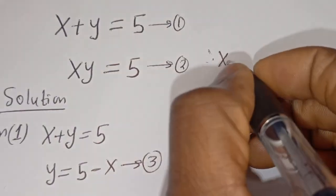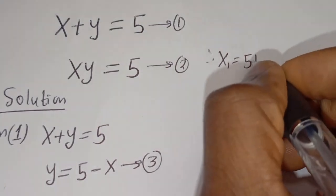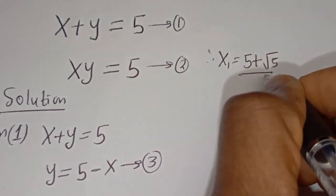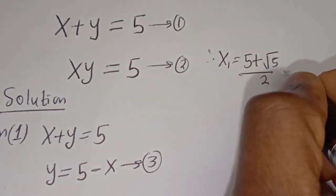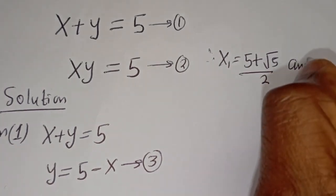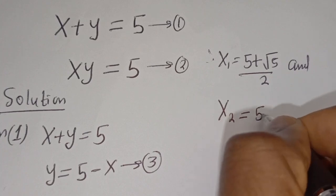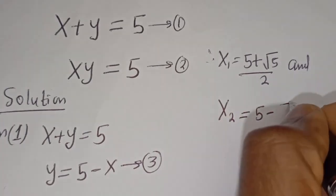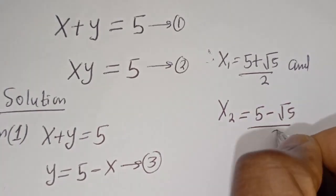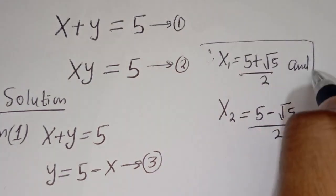Therefore, x1 is equal to 5 plus root 5 over 2, and x2 is equal to 5 minus root 5 over 2. We have got the values of x1 and x2.